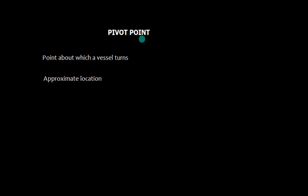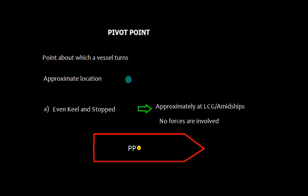Let's talk about pivot point. This is the point about which a vessel turns. We need to know only the approximate location — we should have some idea about pivot point; there is no need to know the exact location. When the vessel is at even keel and stopped, the pivot point is going to act approximately at LCG, that is, longitudinal center of gravity, or very close to amidships, as there are no forces involved.